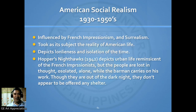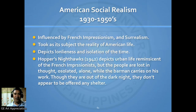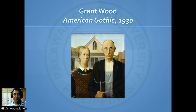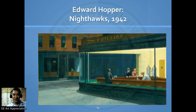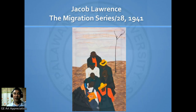American Social Realism during the 1930s to 1950s was influenced by French Impressionism and Surrealism. It depicts loneliness and isolation of the time, taking as its subject the reality of American life. Grant Wood's American Gothic in 1930, Edward Hopper's Nighthawks in 1942, Archibald Motley's Nightlife in 1943, and Jacob Lawrence's The Migration Series are key examples.